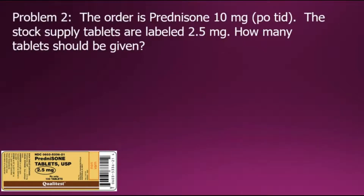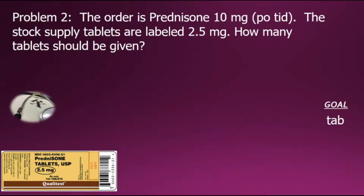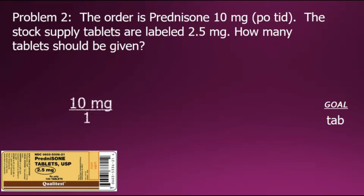Problem number two states the order is prednisone 10 milligrams, PO TID. The stock supply tablets are labeled 2.5 milligrams. How many tablets should be given? Again, to help us solve the problem, let's set the goal, which is to answer the question — in this case, it's asking us how many tablets. We'll begin with the doctor's order expressed as a fraction.